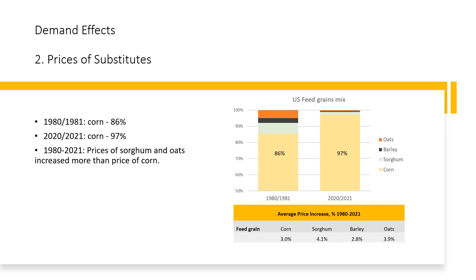Prices of corn substitutes also impact demand for corn. Corn is the primary livestock feed, and its use has been increasing over time — corn accounted for 97 percent of all feed grains in the U.S. in the 2020-21 marketing year, an 11 percent increase from 1980-81. Feed use of corn depends on the number of animals on feed, the price of corn, and the prices of competing feed grains. During 1980-2021, prices of sorghum and oats increased more than the price of corn, so farmers chose to use the cheaper feed — corn.